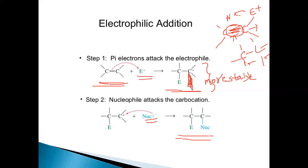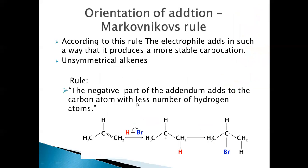This carbocation intermediate is formed, and in the next step the nucleophile attacks the positively charged carbon, resulting in the formation of the addition product — the alkyl halide. This is the mechanism followed here.